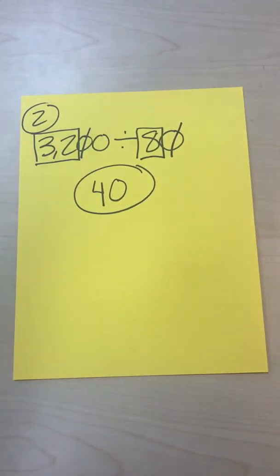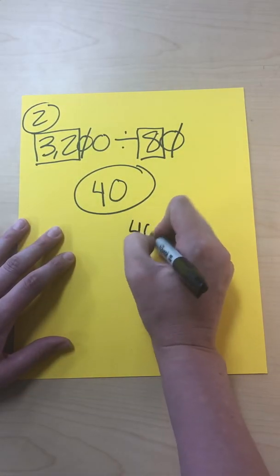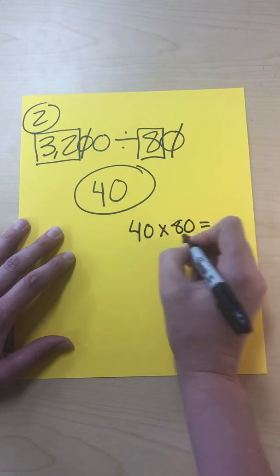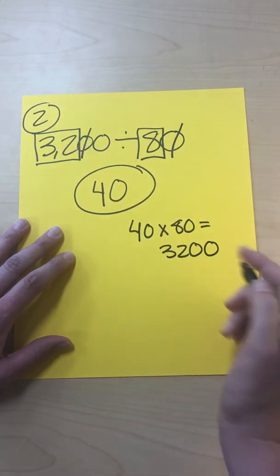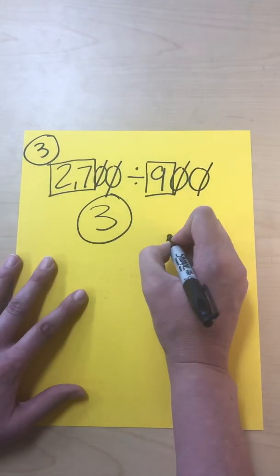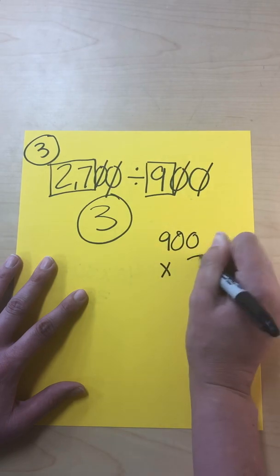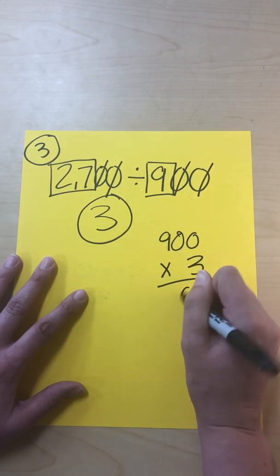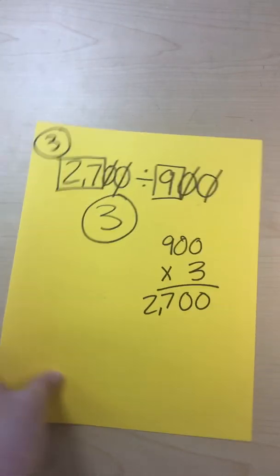So let's say you're doing those and you're confused. I don't know if I'm doing this right. Remember, you can always check. So 40 times 80 is 3200 plus the two zeros. And that's what we started with. So you'll know you must have done that one right. Then you can think, I don't know if I did this one right? You do 900 times 3, and we should get this. And that's what we started with. So if you're confused, you can always check too.